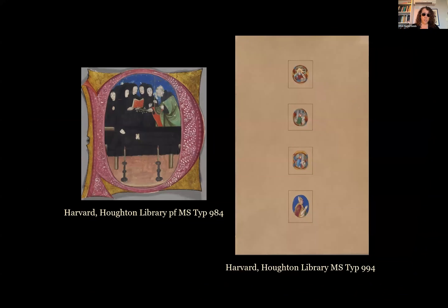The next phase of fragmentation begins in the 18th century, as manuscripts begin to be cut up "for pleasure and profit," in the words of Christopher de Hamill, instead of for practical purposes. Throughout the 18th and 19th centuries, collectible illuminated initials and miniatures were cut out close to the borders, the remnant text often discarded.